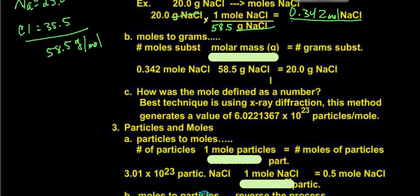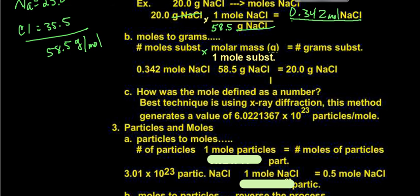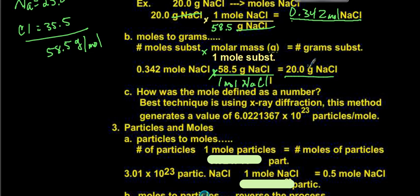We can also go the other way — moles to grams. We take the number of moles and multiply by the molar mass divided by 1 mole of substance. So we take our 0.342 moles of NaCl and multiply by 58.5 grams per mole of NaCl. Because we just did this in the previous problem, it works out to 20.0 grams of NaCl.